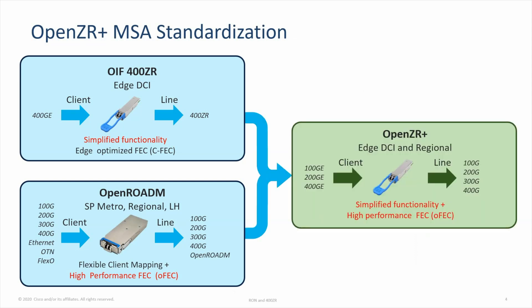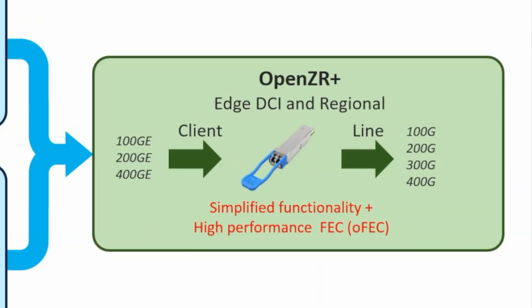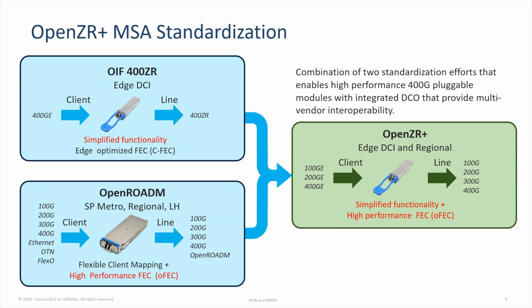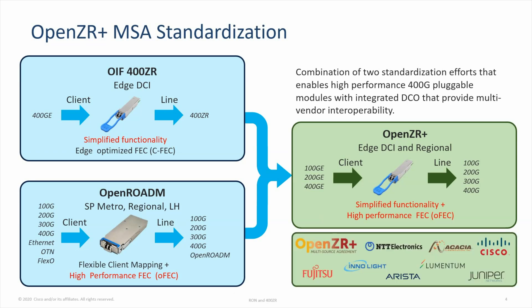The OpenZR Plus MSA attempts to combine the best of both standards, retaining the simplicity while keeping the multiple rates with high-performance spec. This simplification allows 400GB ZR Plus to be integrated into a QSFP-DD pluggable. Cisco and many other vendors are active members of the OpenZR Plus MSA to ensure multi-vendor interoperability.